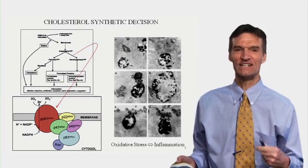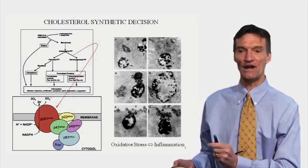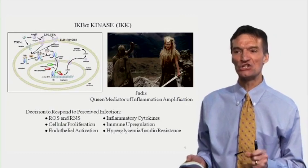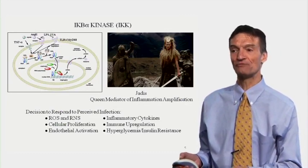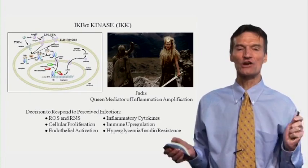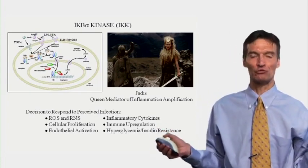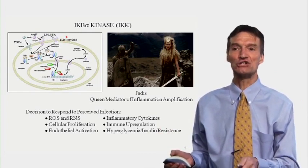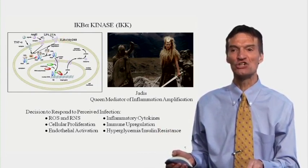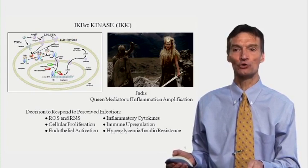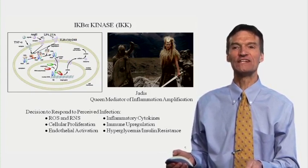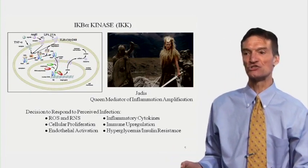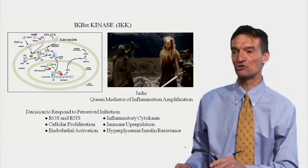The decision to generate cholesterol is also the decision to generate superoxide free radicals from NADPH oxidase, making our white cells into killing machines. Unfortunately, they're killing the cells that line our arteries. We're going to activate Icpokinase — Queen Jadis — the mediator of inflammation and amplification. When our cells experience a threat like lipopolysaccharide or free fatty acids, we initiate a chain reaction of serine kinases, activating Icpokinase, releasing nuclear factor kappa-beta in the nucleus to code for inflammatory mediators and oxidative stress mechanisms.